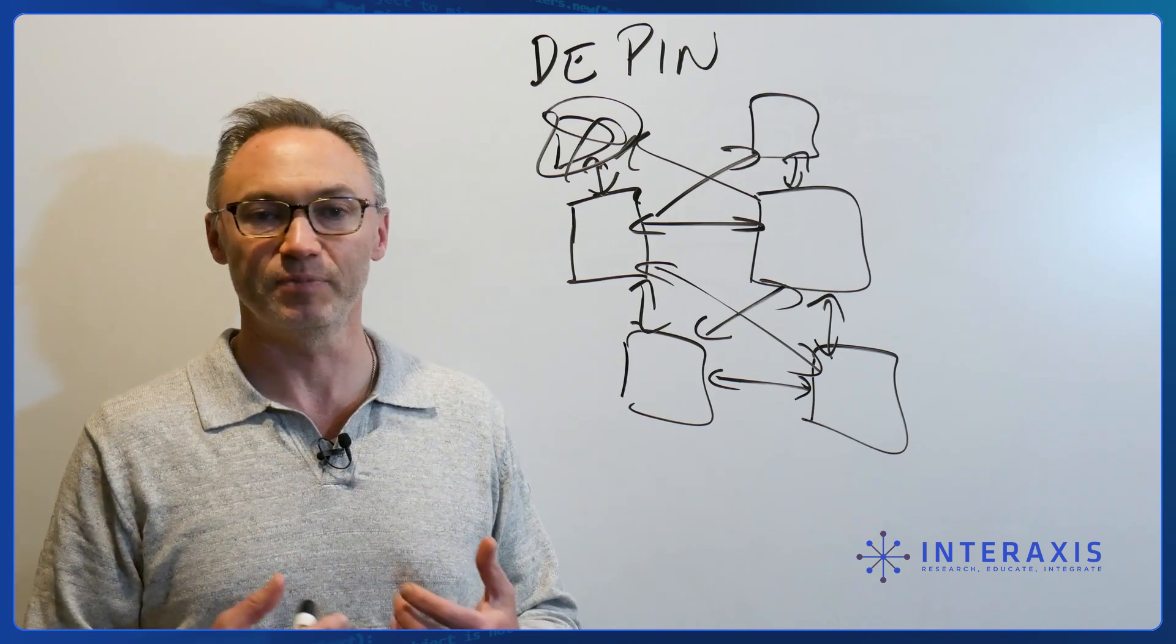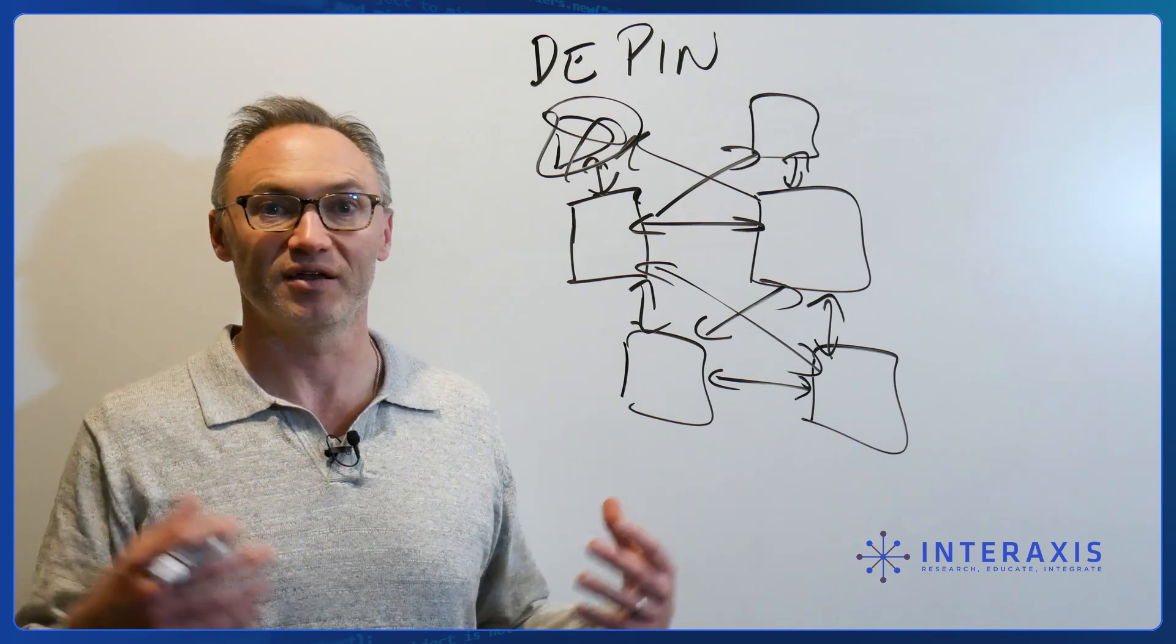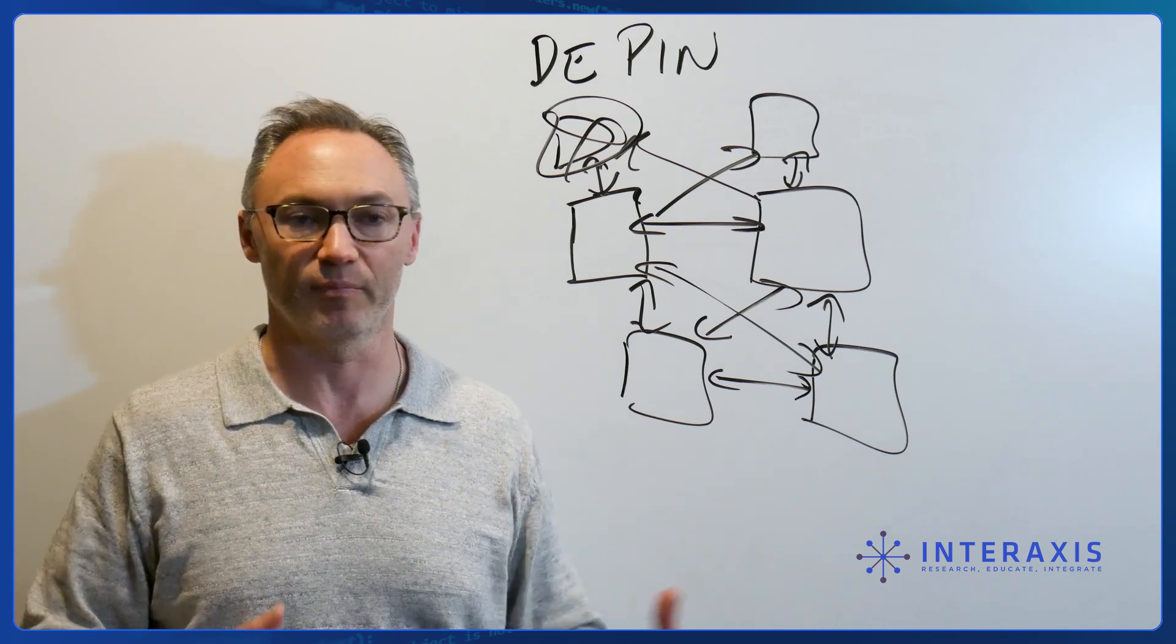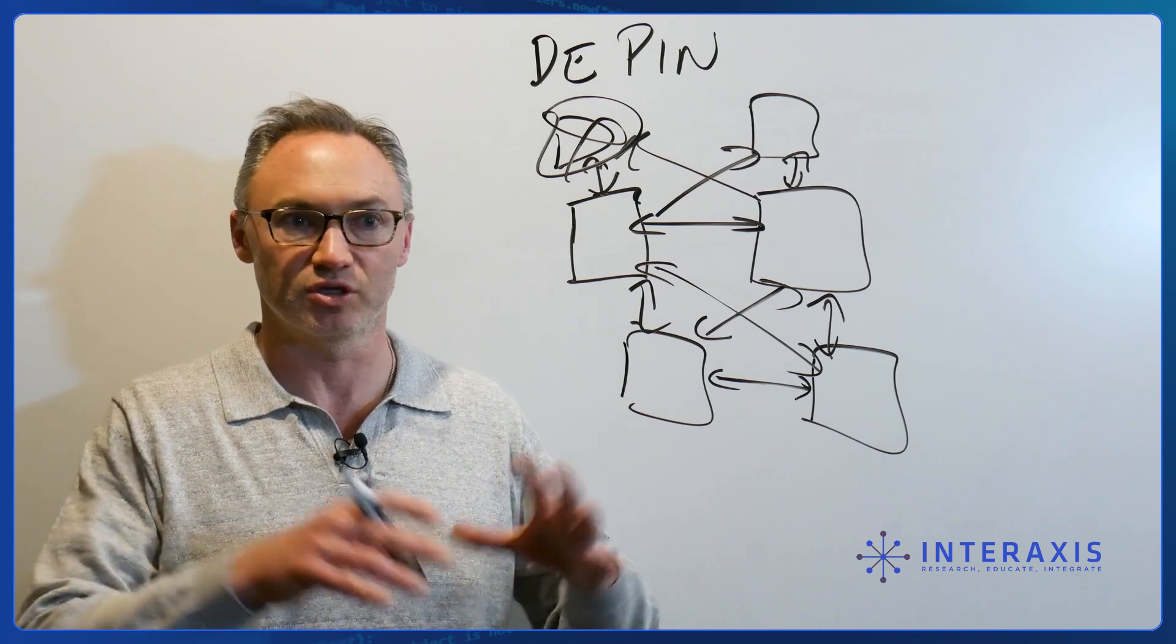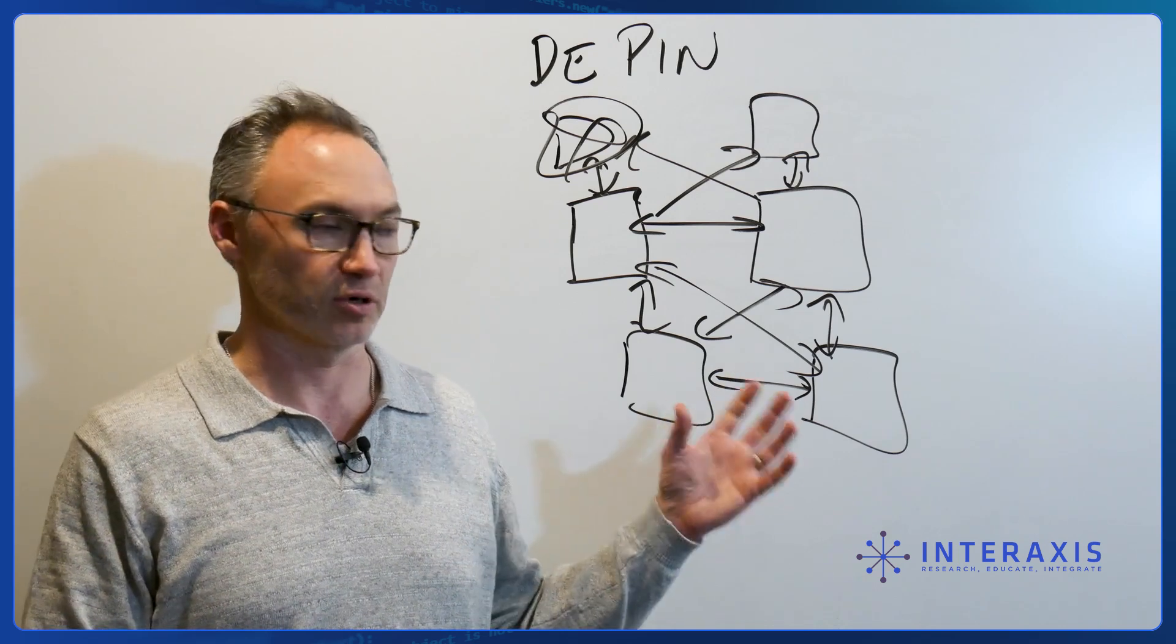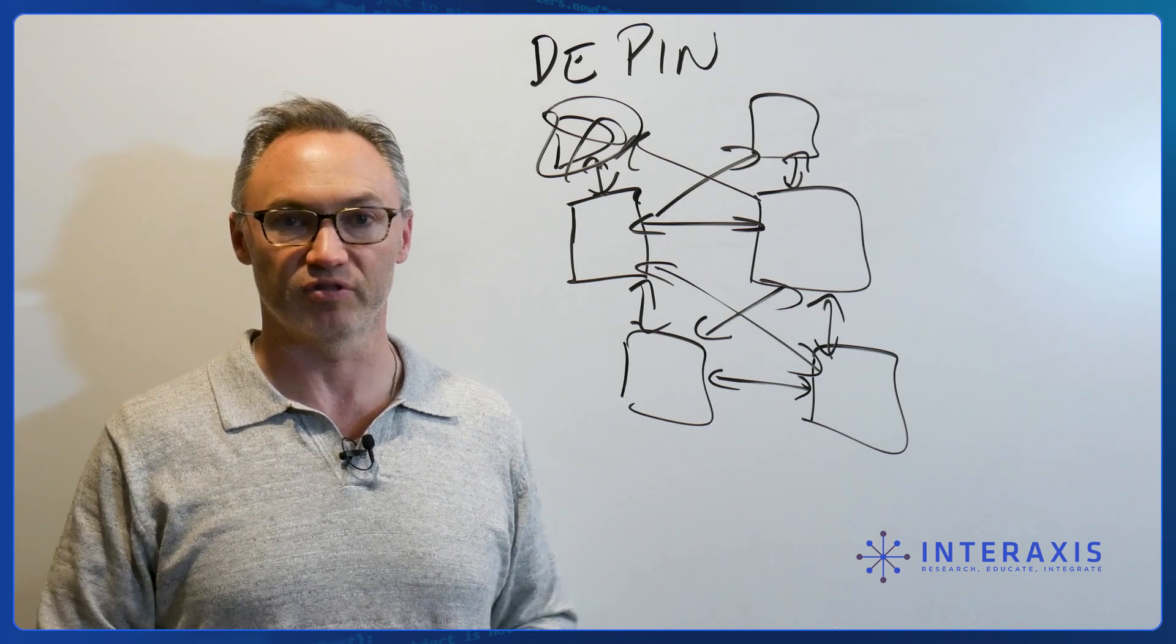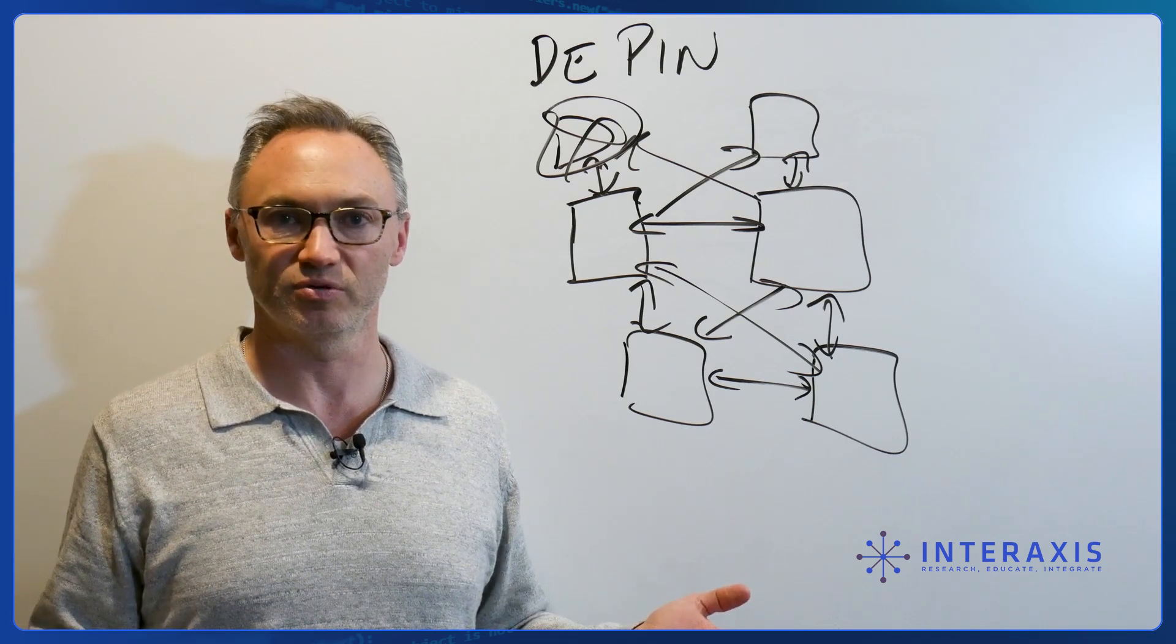But now the idea of D-PIN is, you can help, I can help, we can all help create the infrastructure now. We don't need a huge company like AT&T, or Comcast, or T-Mobile, or Verizon, or something to set up the 5G networks, or set up the Wi-Fi networks. You and I can purchase some of these boxes, we can set them up, we can configure them, hopefully correctly, and we can get paid because other people are going to use the network.